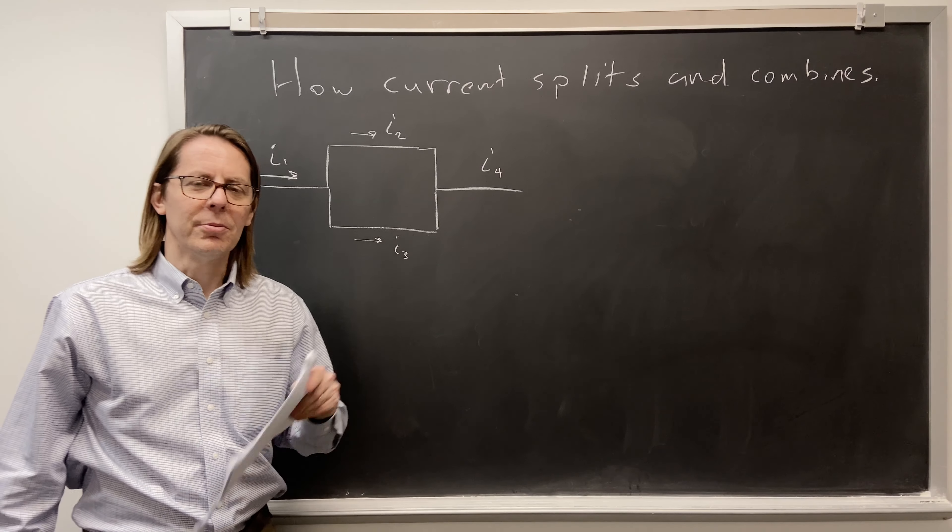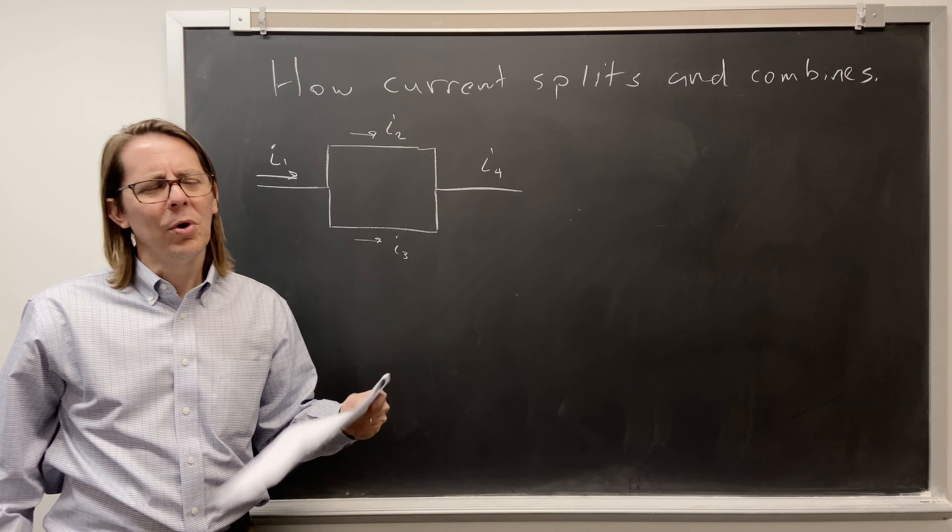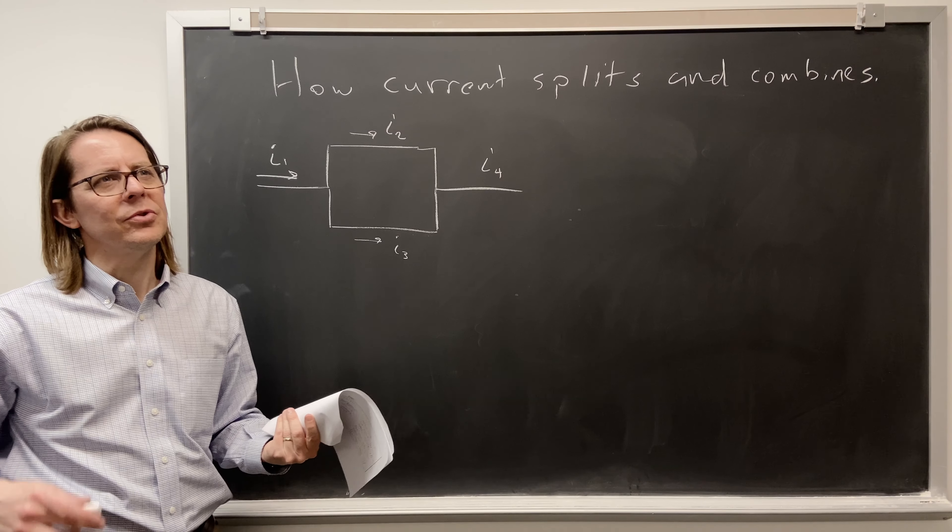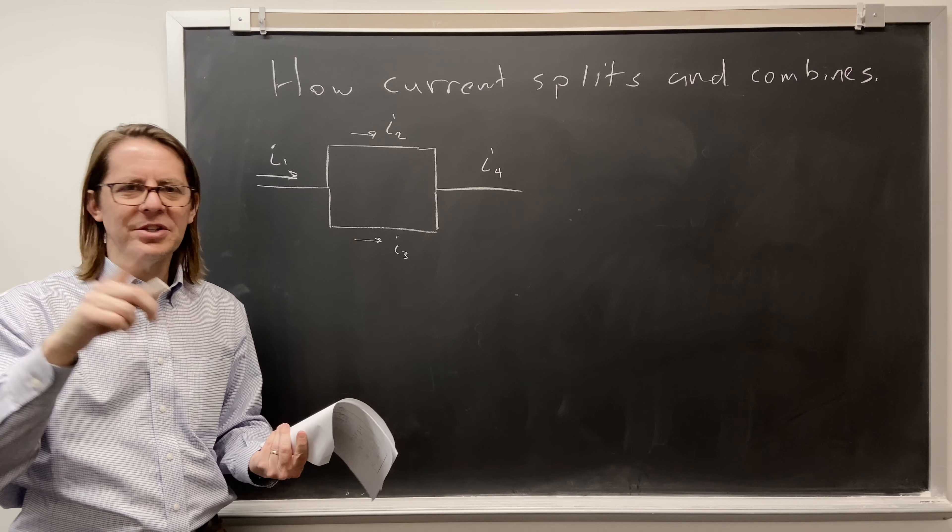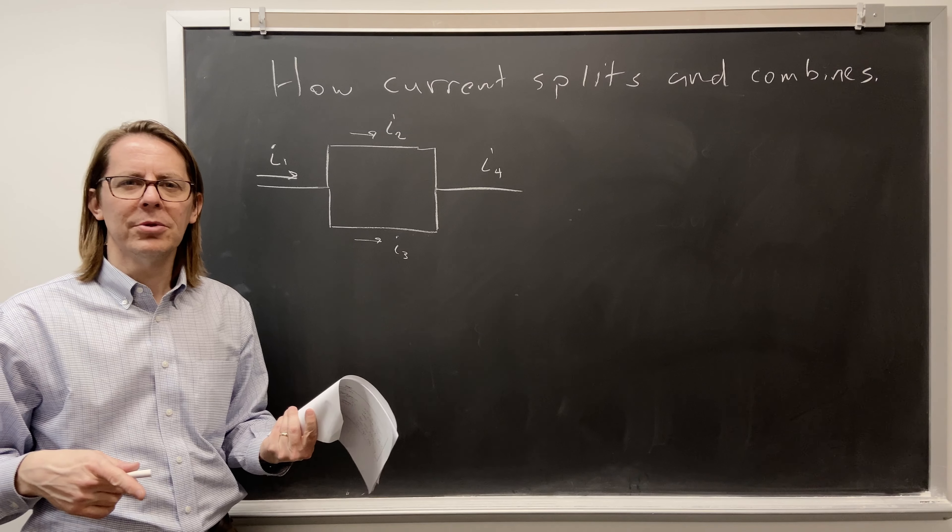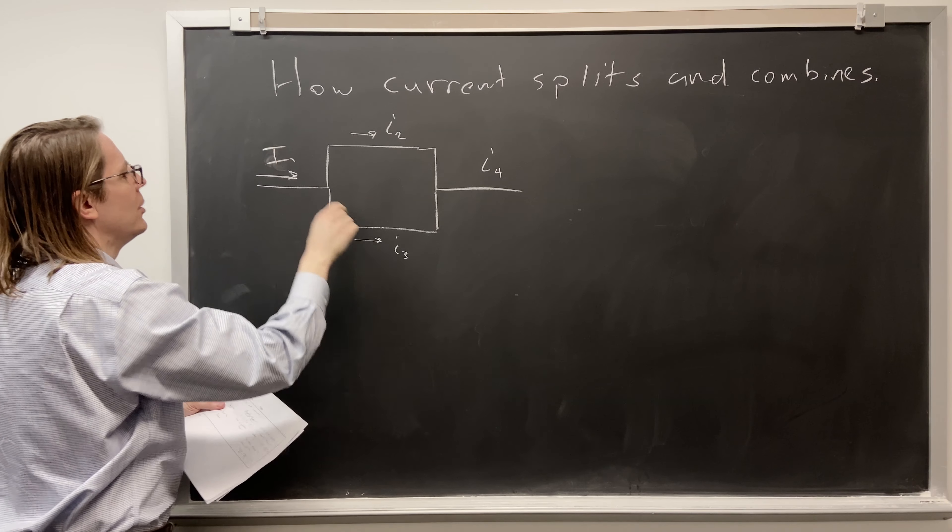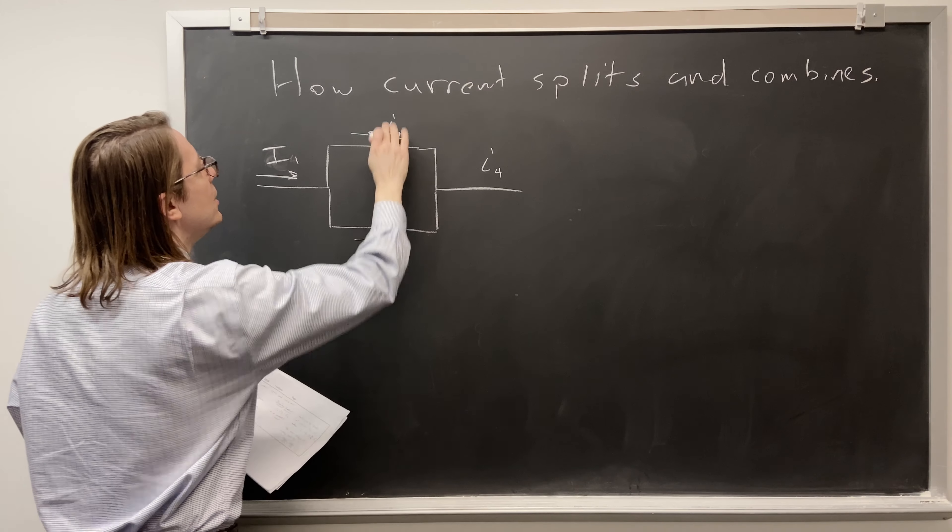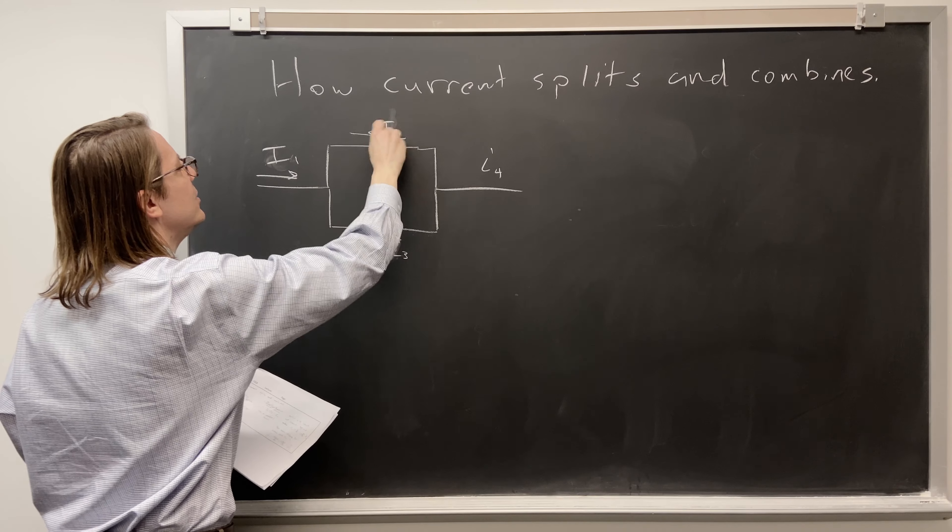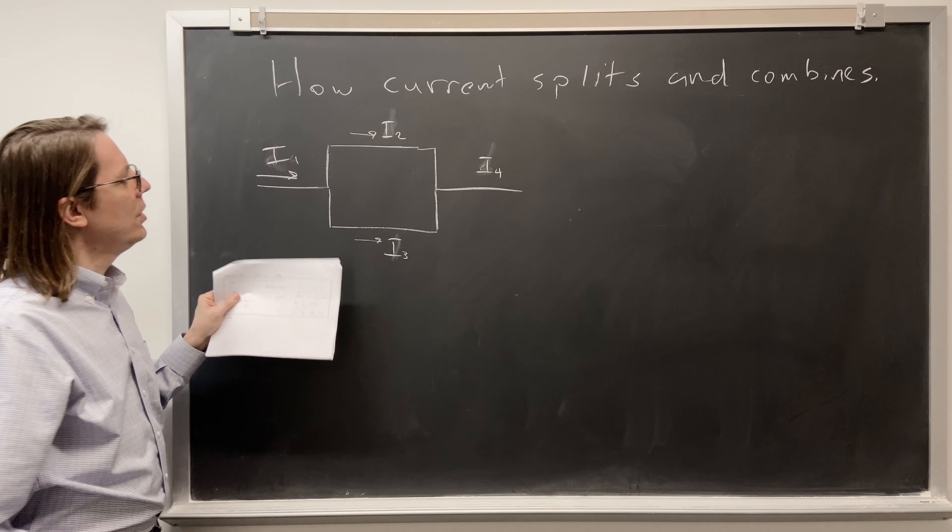You'll notice I jumped from capital I to lowercase i. Just get used to it. One way we try to be consistent is to use capital when it's a constant variable, and if it's something that's changing in time, maybe you would call that a lowercase variable. So I will stick to my own rules, and I will switch this to big I's because these are constant, steady state, not changing currents. I1, I2, I3, I4.